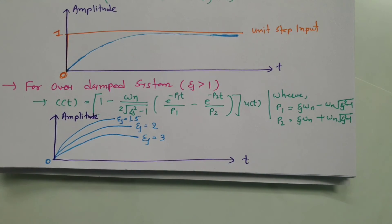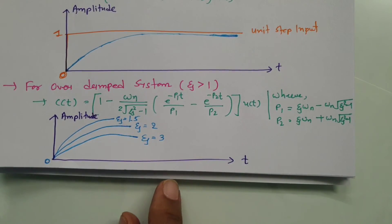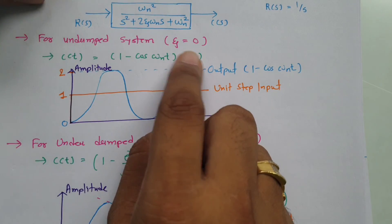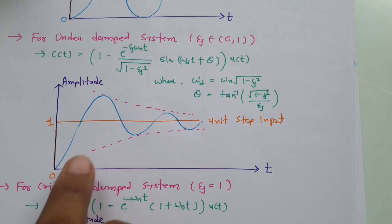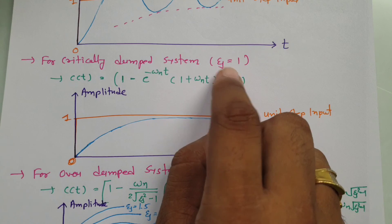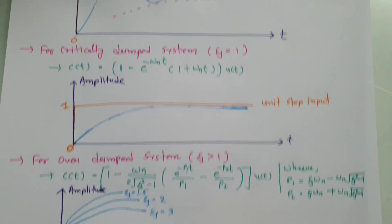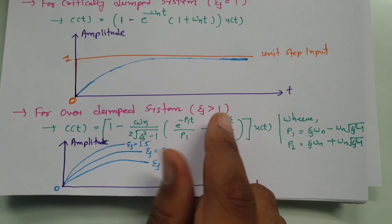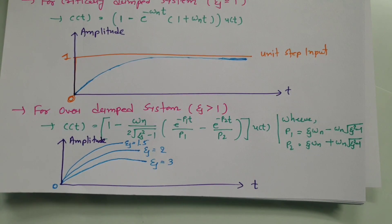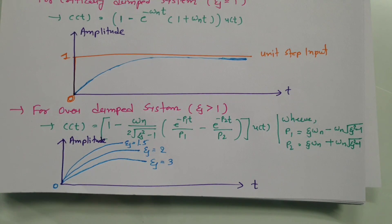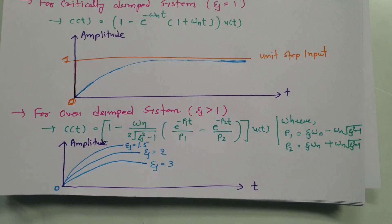In summary, second order system responses differ based on the damping constant zeta: undamped (zeta=0) produces sustained oscillation, underdamped (0<zeta<1) produces a decaying oscillatory response, critically damped (zeta=1) produces the fastest non-oscillatory response, and overdamped (zeta>1) produces a slower non-oscillatory response. Thank you for watching. Please give your valuable suggestions, as they help in making future videos that address your queries.